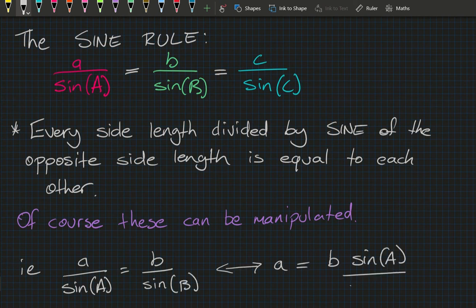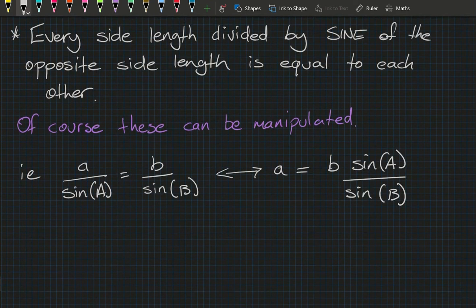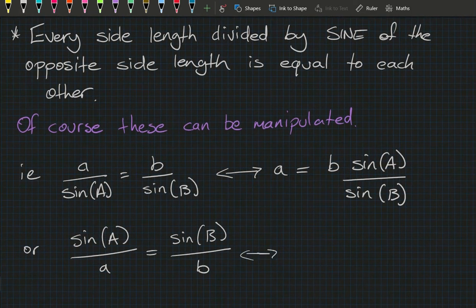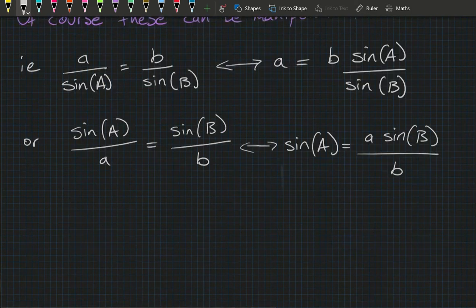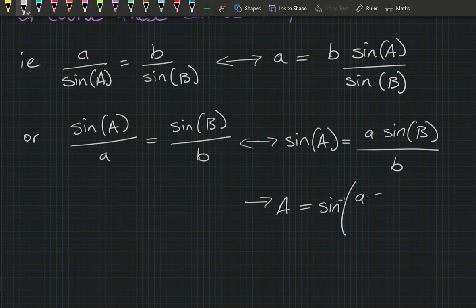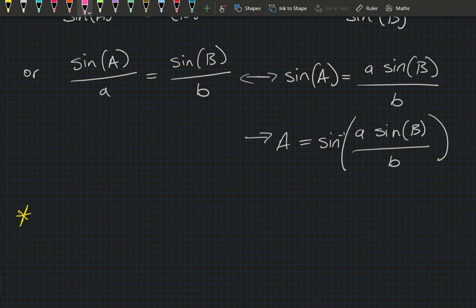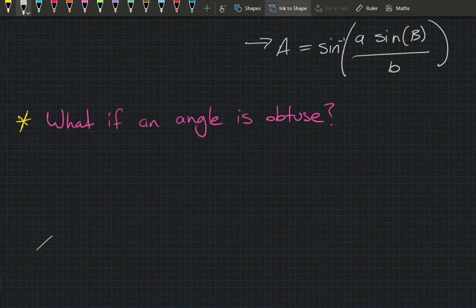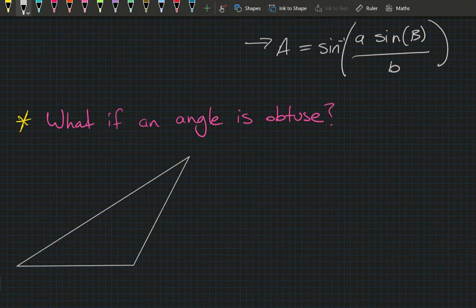We can manipulate these equations usefully. For example, a over sine A equals b over sine B helps us solve for a — multiply both sides by sine A. We can also flip and take the reciprocal: sine A over a equals sine B over b, then multiply both sides by a and take the inverse sine to solve for angle A.